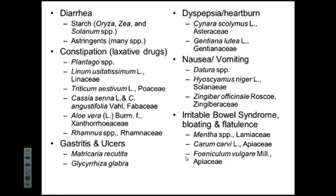For heartburn and dyspepsia, you have Cynara scolymus, also in the Asteraceae family. It looks somewhat similar to Silybum marianum, but a smaller-looking plant — similar to milk thistle but a different genus. And then we have Gentiana lutea, or yellow gentian. I brought this back from the Balkans; if you dip your tongue to this it's intensely, intensely bitter because of the compounds in it.